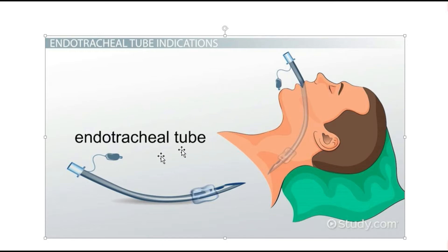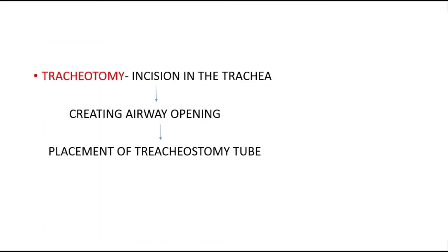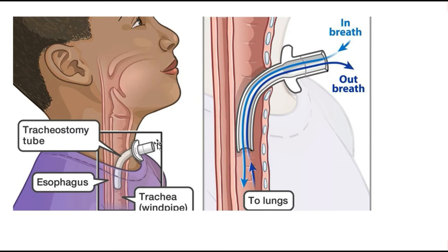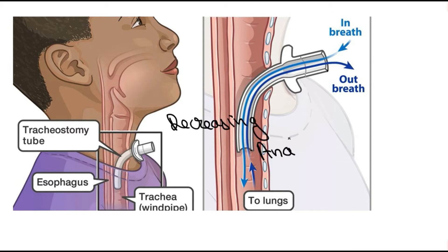Tracheostomy is an incision in the trachea followed by creating an airway opening and placement of a tracheostomy tube. This tube is placed through a surgical incision and helps with air in and air out. One advantage is that it decreases the anatomical dead space.